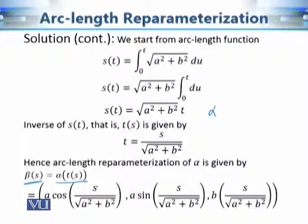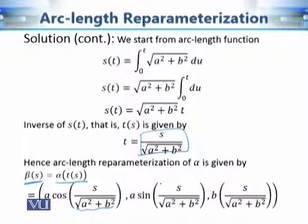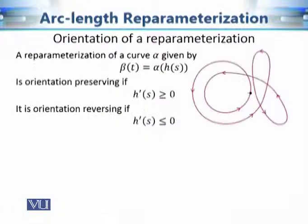Now we find the arc length re-parameterization: beta(s) = alpha(t(s)). This is obtained by replacing t with s / sqrt(a² + b²) in the original parameterization alpha. That gives our new parameterization of the same geometrical path, now expressed in terms of the arc length parameter s.